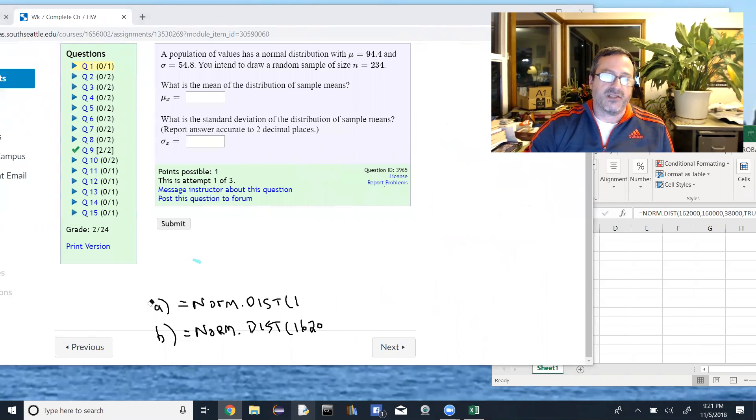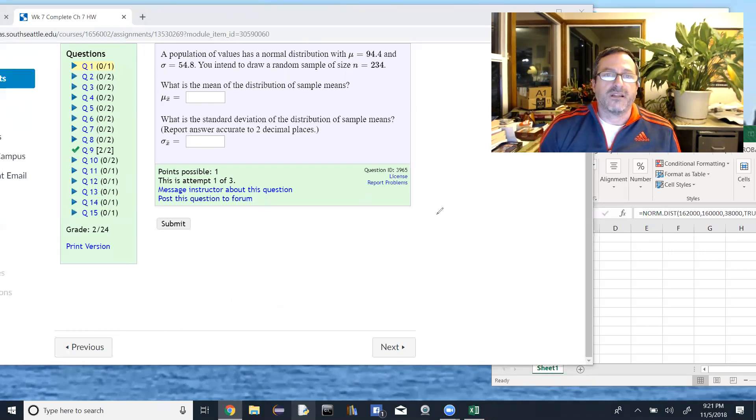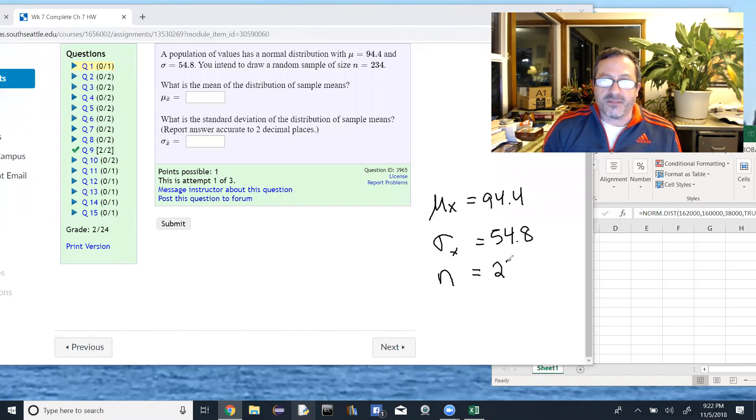So what we have to identify is what is the original mean. In this case our original mean is 94.4, and what is the original standard deviation. In this case our original standard deviation is 54.8. So the mu sub x is 94.4 and the sigma sub x is 54.8. And then when we take our sample size, the n sample size is 234. So again the central limit theorem tells us mu sub x bar equals mu sub x, and sigma sub x bar equals sigma x divided by the square root of n. I won't do this problem but I just wanted to show you how to set that up. And again we have the first part already, and the second part we just take this 54.8 and divide it by the square root of 234.